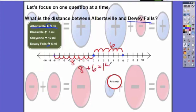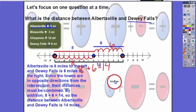I'm going to check my work with our answer key. We have a length of fourteen. Albertsville is eight miles to the left which we showed with the red line, and Dewey Falls is six miles to the right which we showed with the blue line. Since the towns are in opposite directions from the intersection, their distances must be combined. Combined meaning we are adding them.